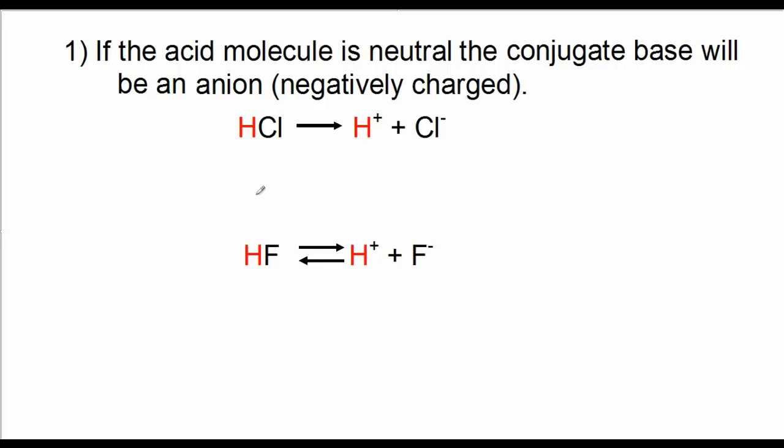So here's a case of a strong acid, HCl, hydrochloric acid. Neutral acid molecule. When that molecule dissociates, it forms H+ and chloride ion. The conjugate base in this case is the chloride ion.